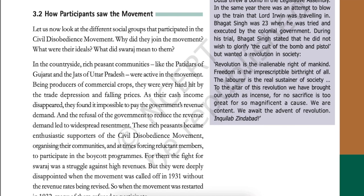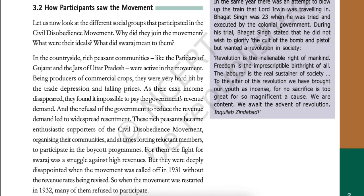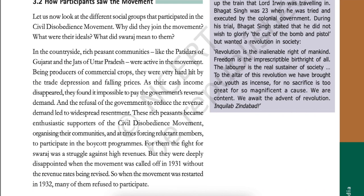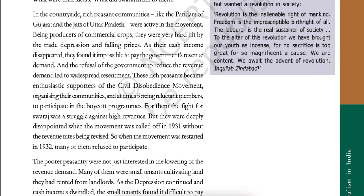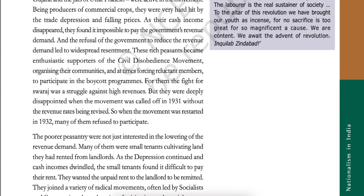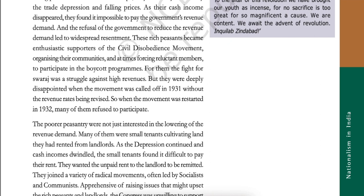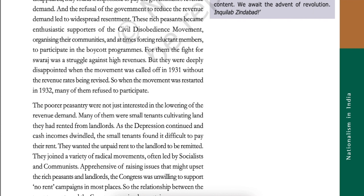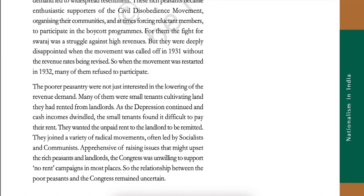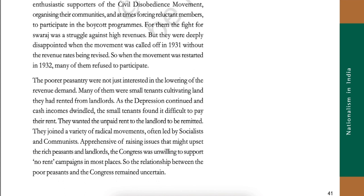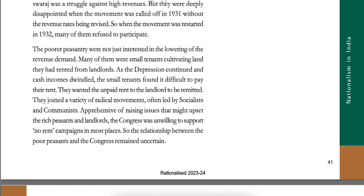How Participants Saw the Movement. Let us now look at the different social groups that participated in the civil disobedience movement. In the countryside, rich peasant communities like the Patidars of Gujarat and the Jats of Uttar Pradesh were active in the movement. Being producers of commercial crops, they were very hard hit by the trade depression and falling prices. As their cash income disappeared, they found it impossible to pay the government's revenue demand. These rich peasants became enthusiastic supporters of the civil disobedience movement, organizing their communities and at times forcing reluctant members to participate in the boycott programs. For them, the fight for Swaraj was a struggle against higher revenues. But they were deeply disappointed when the movement was called off in 1931 without the revenue rates being revised.